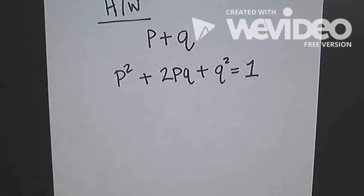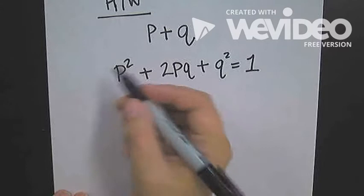First, let's start with the big picture, which is why we use Hardy-Weinberg. The reason we use Hardy-Weinberg is to look at populations.